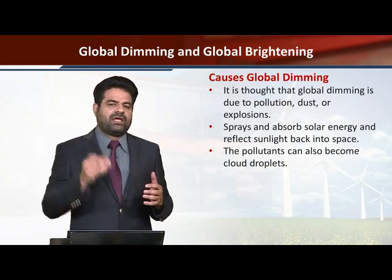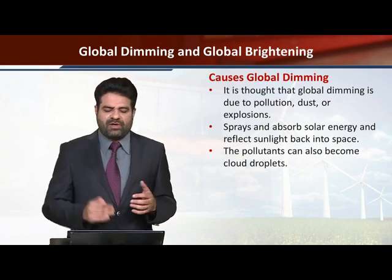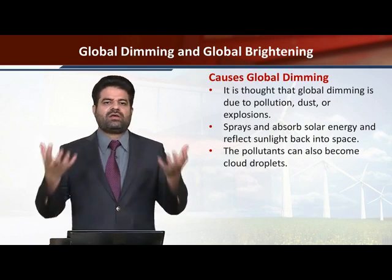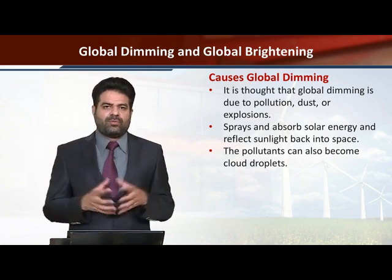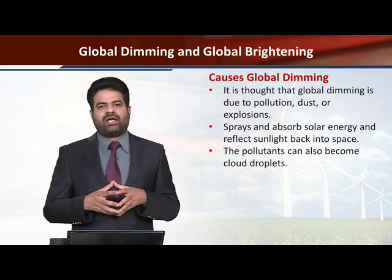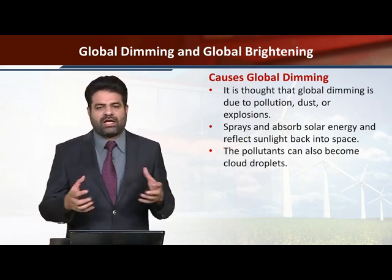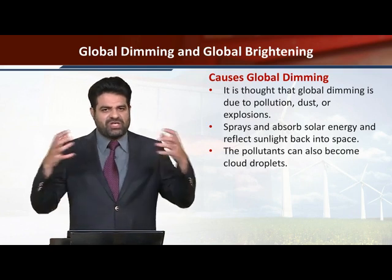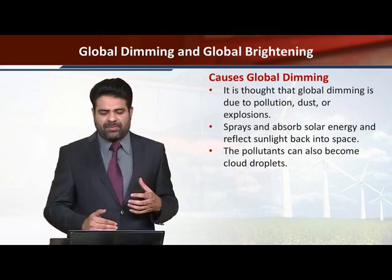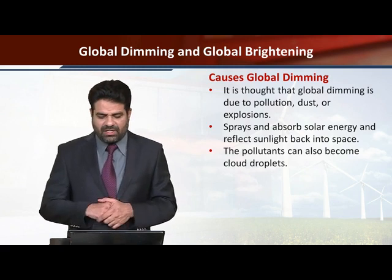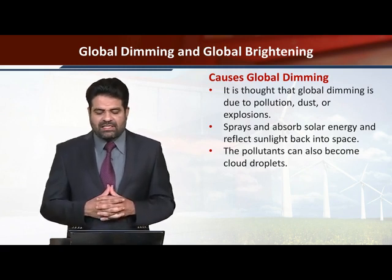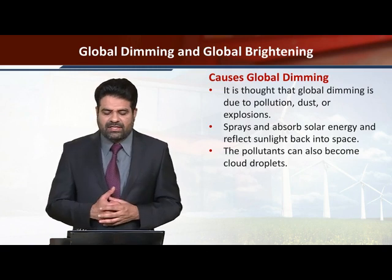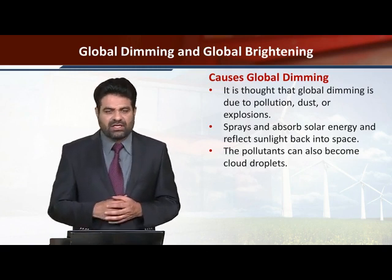Light does not properly reach the earth due to pollution, dust, and explosions — including large industrial explosions and those related to weapons. These factors prevent sunlight from properly reaching the surface. Pollutants absorb and reflect solar energy, reflecting sunlight back into space.